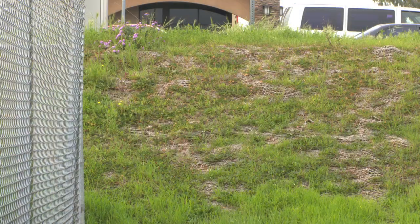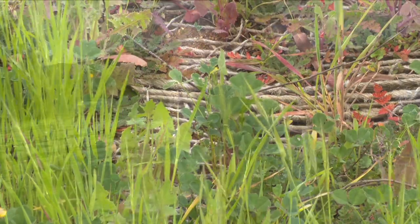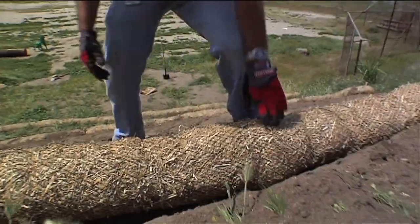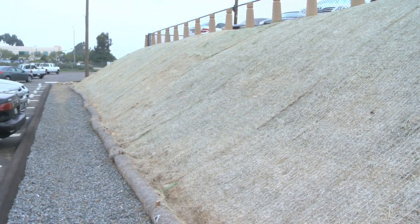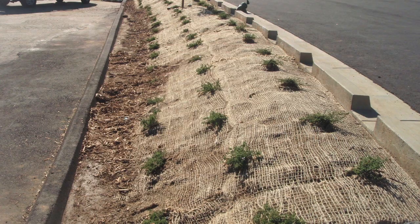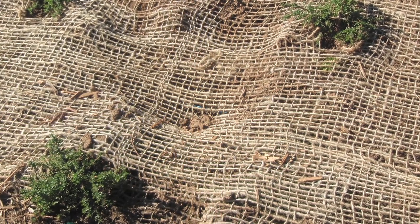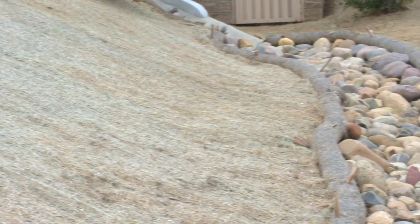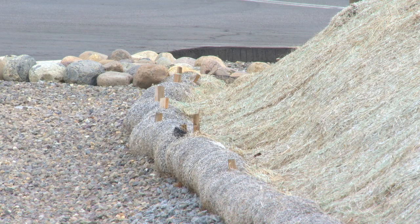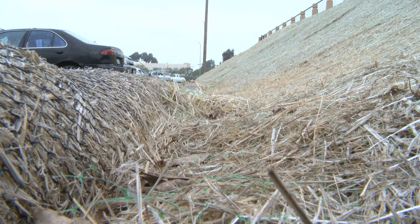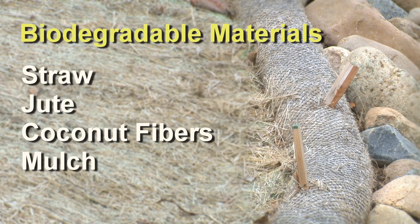Chances are, with most slopes, you'll need some type of erosion control BMP. Some of the most common erosion control BMPs are fiber rolls, but today we're looking at some other options. Just like fiber rolls, geotextiles and mats are temporary erosion control BMPs used to protect exposed slopes against erosion. Geotextiles and mats are placed directly on the soil surface to hold the soil in place and contain the moisture while promoting growth of vegetation. They are open weave fiber blankets made of biodegradable materials, including jute, coconut fibers, or mulch.